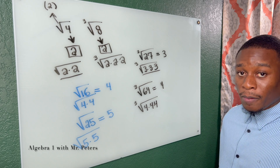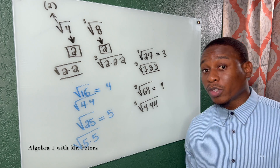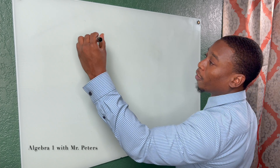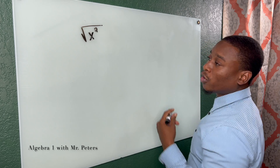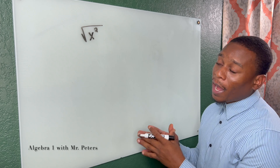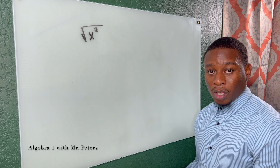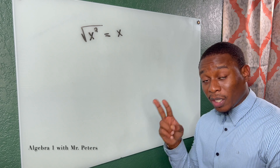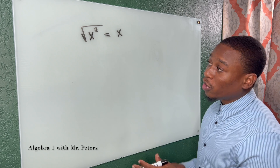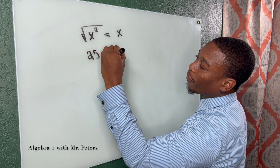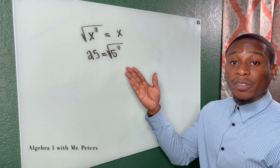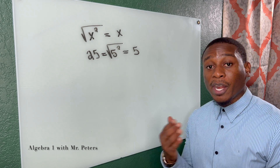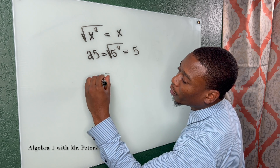Variables also fall under this rule when simplifying radicals. The square root of x squared equals x because every time we have a pair of two, when simplified it is just x. For example, 25 is the same as 5 squared, so the square root of 5 squared is just 5 — same concept, just with a variable instead of a number value.